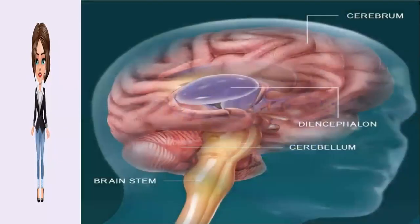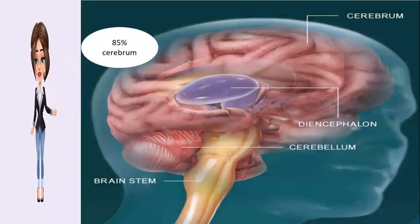The brain consists of the cerebrum, the brainstem and the cerebellum. The cerebrum makes up 85% of the brain's weight.